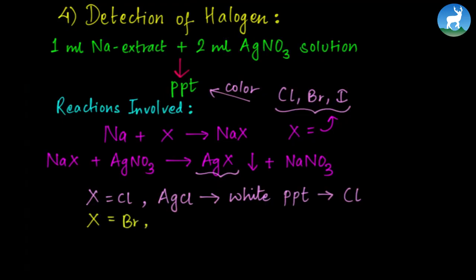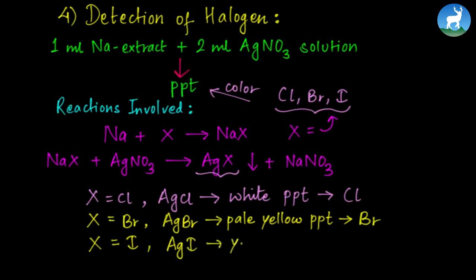If X is Br, silver bromide forms with pale yellow precipitate indicating bromine. If X is I, silver iodide forms with bright yellow precipitate indicating iodine.